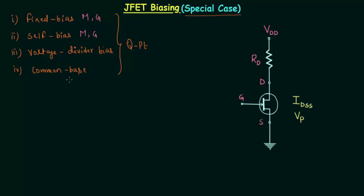In voltage divider bias and in common base configuration, we followed only the graphical approach. In the fifth case — the special case — we will also follow only the graphical approach. This biasing scheme is special because the operating point has the x-coordinate equal to zero. The operating point has x-coordinate VGSQ and y-coordinate IDQ, and in this special case, VGSQ is equal to zero volt.